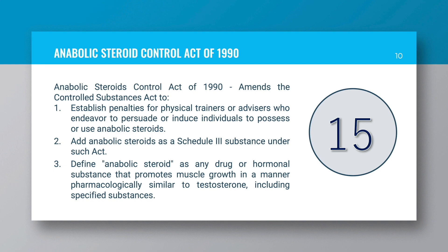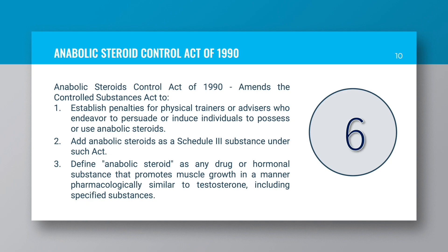Anabolic Steroids Control Act of 1990: The Anabolic Steroids Control Act of 1990 amends the Controlled Substances Act to: 1. Establish penalties for physical trainers or advisers who endeavour to persuade or induce individuals to possess or use anabolic steroids. 2. Add anabolic steroids as a Schedule III substance. 3. Define anabolic steroid as any drug or hormonal substance that promotes muscle growth in a manner pharmacologically similar to testosterone, including specified substances.